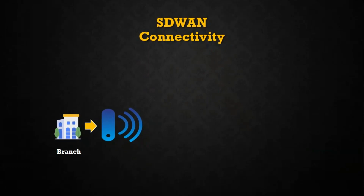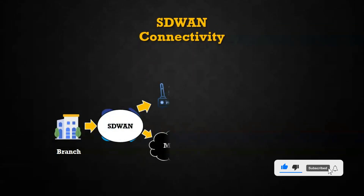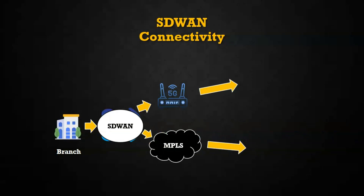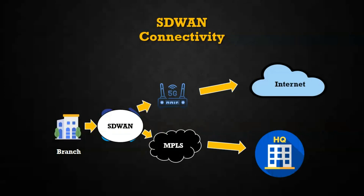The SD-WAN connectivity model is designed to fully support applications hosted in on-premises data centers, public and private clouds, and SaaS services such as Salesforce, Workday, Microsoft 365, and more, while delivering a high level of application performance. In SD-WAN connectivity, since it supports multiple transport media, we can keep one dedicated 5G or 4G router at the branch for direct internet access. This way connectivity is more efficient and reduces reliance on MPLS, which is costlier compared to internet services.